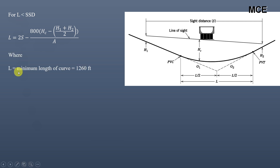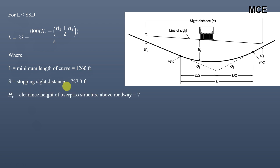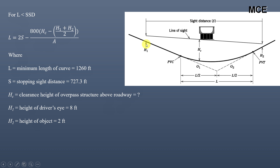Here, L is the minimum length of curve, which in our case is 1260 feet. S is the stopping sight distance, which is 727.3 feet. HC is the clearance height of the overpass structure above the roadway, which we have to find. H1 is the height of the driver's eye, which is 8 feet according to AASHTO, and H2 is the height of the object, which is 2 feet according to AASHTO.